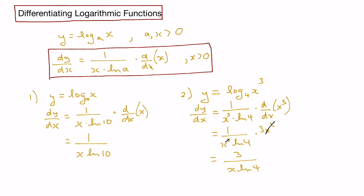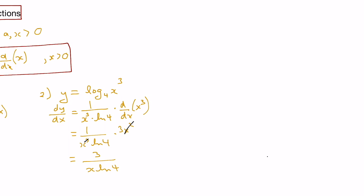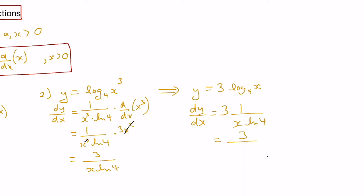There is another way we could have done this second example by applying properties of logarithms. We could rewrite y equals log base 4 of x cubed as y equals 3 log base 4 of x. The derivative of y with respect to x would then be 3 times 1 over x ln 4, which gives us 3 over x ln 4 — the same answer.